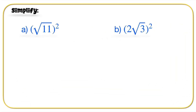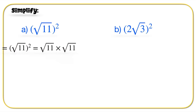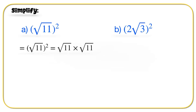Let's do a few questions. Part A: root of 11 squared is root 11 times root 11, which equals 11. Part B: 2 root 3, all squared, is 2 root 3 times 2 root 3, which can be written as 2 times 2 times root 3 times root 3.